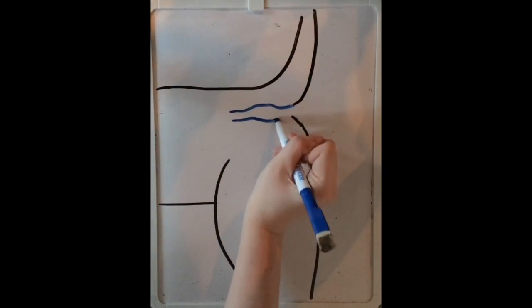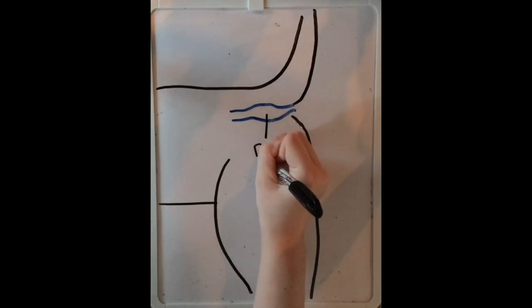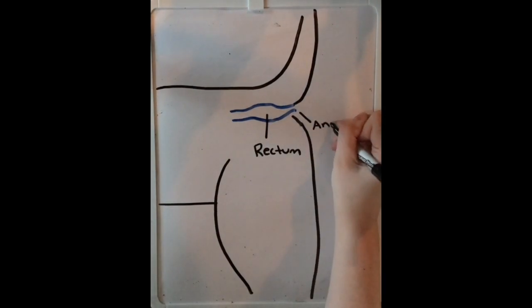And now we are reaching the end of the digestion process. As you can see, the rectum and anus are labeled.